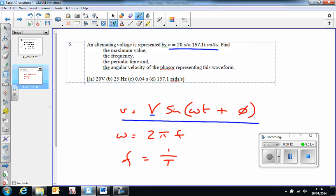Remember V is the maximum voltage, or maximum current if it was I. Omega is the angular velocity, and phi, if there is one, is a phase difference.